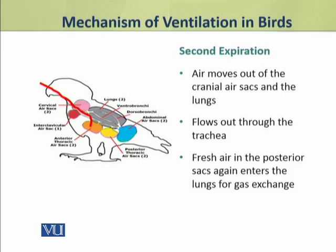During the second expiration, air moves out of the cranial anterior thoracic sacs and flows out through the trachea. Fresh air which is present in the posterior abdominal sacs again enters the lungs for gas exchange. In this way, during the second expiration as well, fresh air is supplied to the lungs.